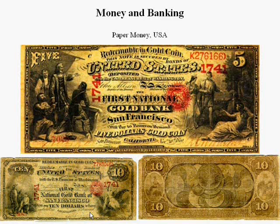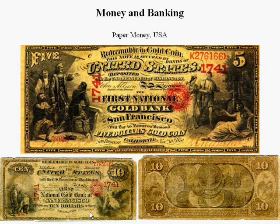Here we have two bills. The top one is a $5 gold note, and the bearer of this note could go to the United States Gold Bank of San Francisco and exchange this $5 note for $5 in gold coin. The bottom bill is the front and back of a $10 gold note, and the bearer could go to the United States National Gold Bank and turn that note in for $10 in gold coin.